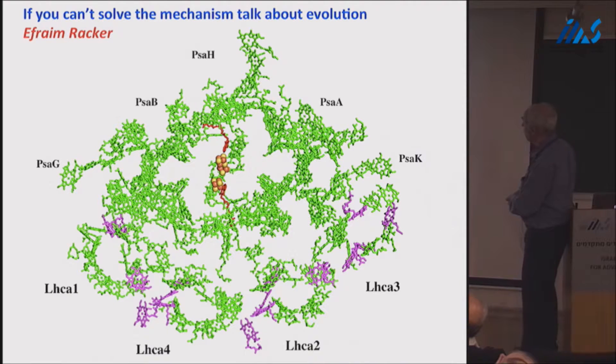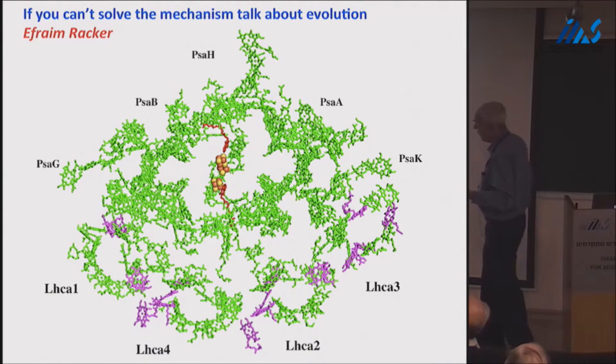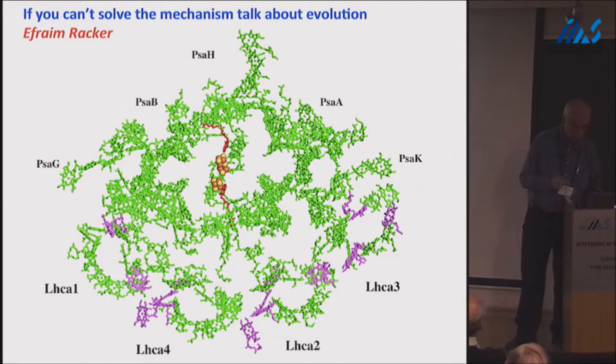If you cannot solve the mechanism, talk about evolution. This is legendary Ephraim Racker, my mentor, of course. So I will follow him willingly. And I will speak about evolution of the system. One of the things that are interesting are these light harvesting chlorophyll proteins. And the question is, did they evolve from a single light harvesting or from four of them or two of them? And here, once again, the sequence will not give us answer at all for the evolution of them because they are quite alike. But the lipids will.